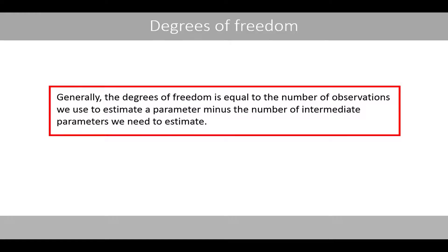Generally, the degrees of freedom is equal to the number of observations we use to estimate the parameter minus the number of intermediate parameters we need to estimate.